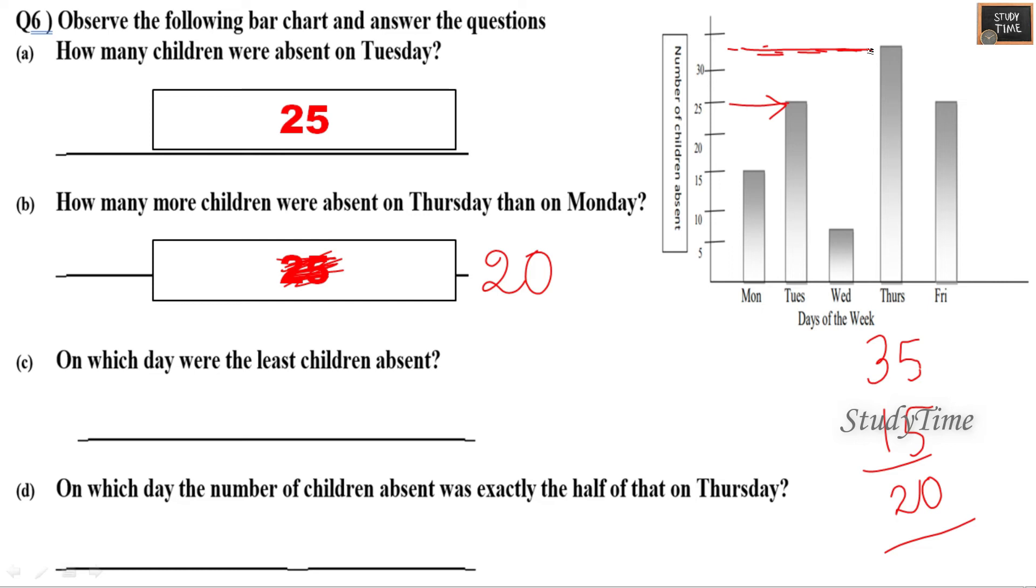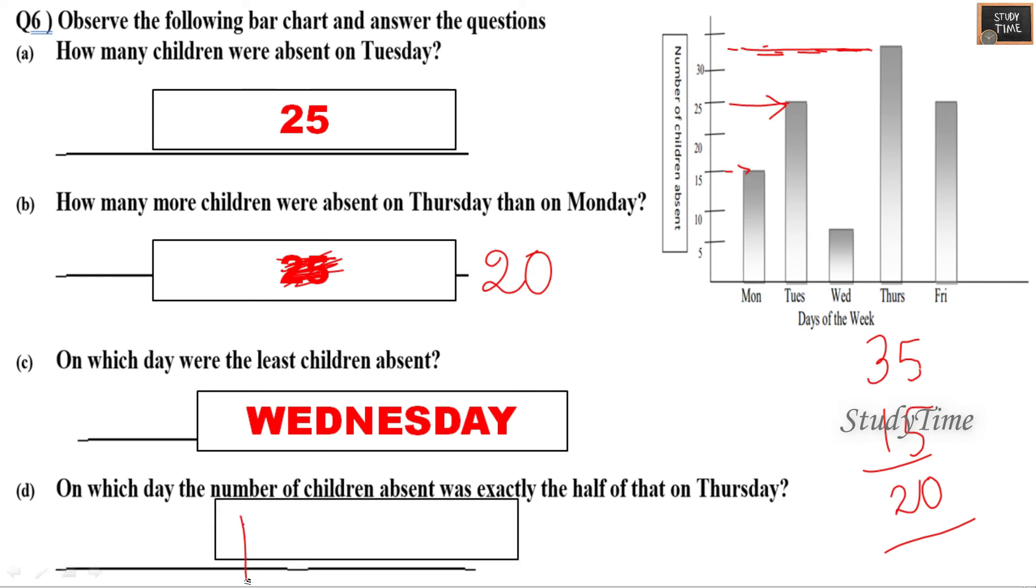On which day were the least children absent? It is on Wednesday. On which day the number of children absent was exactly half of that of Thursday? So Thursday you can see approximately it is 32 or 30, so half of it is somewhere around 15. So the answer is Monday, here it is Monday.